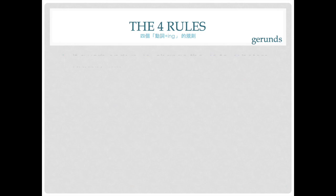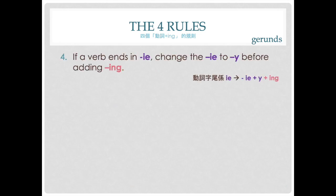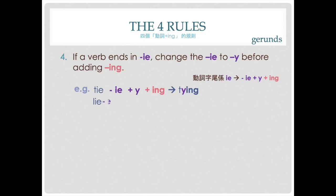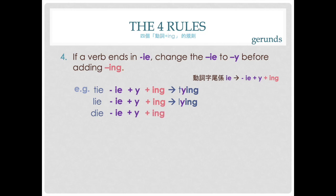Rule number four: if a verb ends in -ie, you change the ie into y before adding -ing. For example, 'tie' — you see ie at the end, you take away ie, add y, add -ing, it becomes 'tying'. 'Lie' — take away ie, plus y, plus -ing, becomes 'lying'. 'Die' — you also see ie at the end, so you take it away, plus y, plus -ing, it becomes 'dying'.